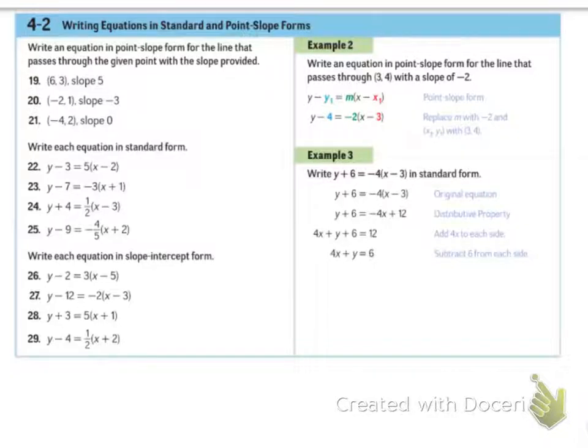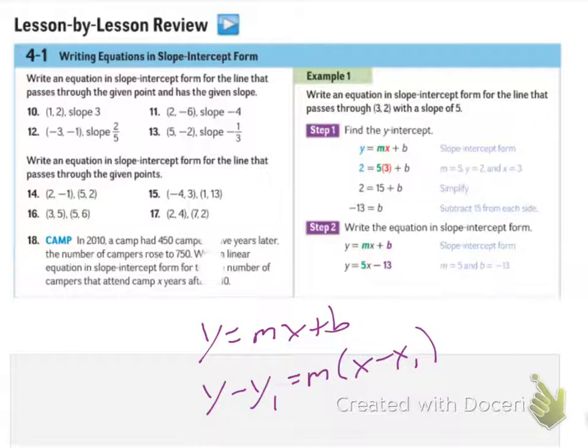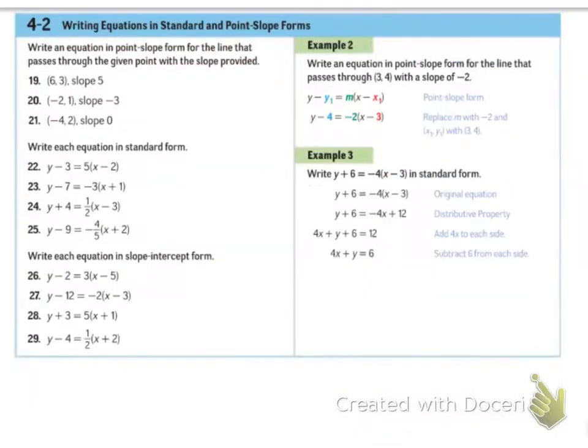The second one is writing it in standard form and point slope form. So for point slope form, you leave it as y minus y1 equals m times x minus x1. So you can leave it in a particular form that is not completely finished. So your problem will look something like y minus 3 equals 1 half x minus 1. That is in point slope form.